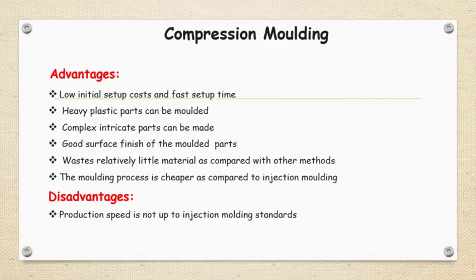Advantages of compression molding: low initial setup cost and fast setup time, heavy plastic parts can be molded, somewhat complex intricate parts can be made, good surface finish of the molded part, and waste is less compared to other processes. The molding process is cheaper compared to injection molding. The disadvantage is that production speed is not as high as injection molding.